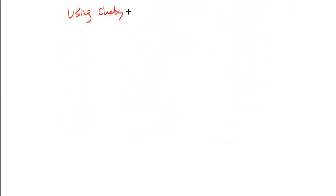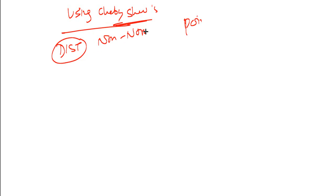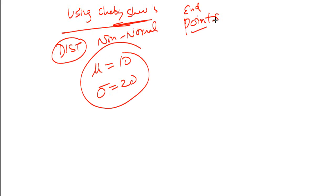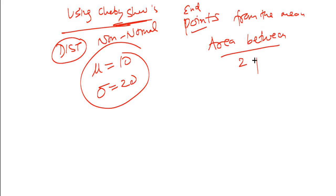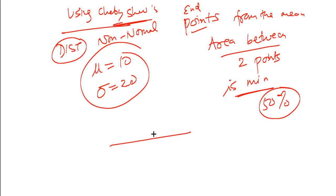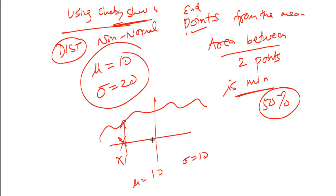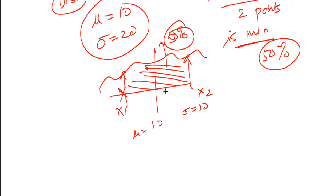Another type of question they may ask: using Chebyshev's inequality, given a non-normal distribution with a mean of 10 and standard deviation of 20, what are the endpoints such that the area between the two points is minimum 50%? So you need to find two points x1 and x2 from the mean such that the area between them is at least 50%.